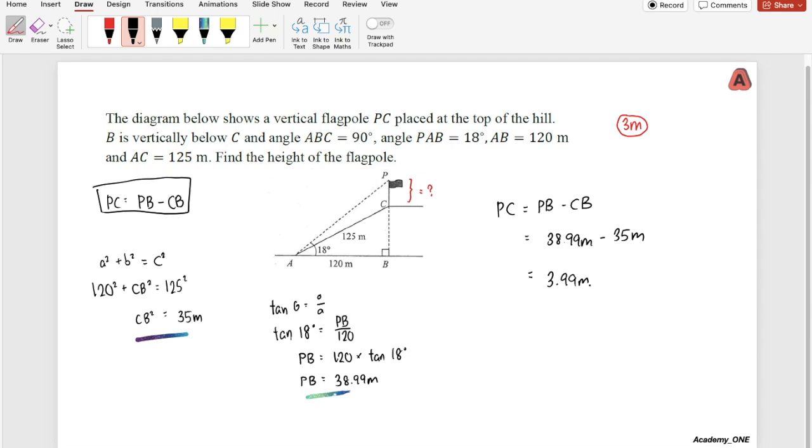So this is the final answer. Let's go to the marking instructions. We're looking at how we get this whole statement and calculate the length of CB. For CB, we get one mark. For PB, we get another mark. And the final mark goes to the height of the pole, PC, with the value 3.99 meters. That's how we get 3 marks for this question and full marks.